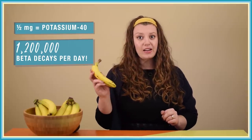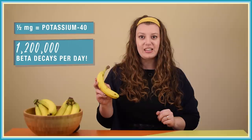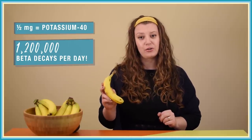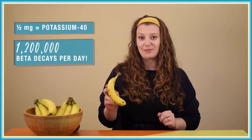So the banana in your kitchen is producing over a million neutrinos per day. And bananas are hardly the only food that neglects to list neutrinos on their nutrition label. Other foods that are rich in potassium — like potatoes, avocados, beans, tomatoes and milk — produce neutrinos too.